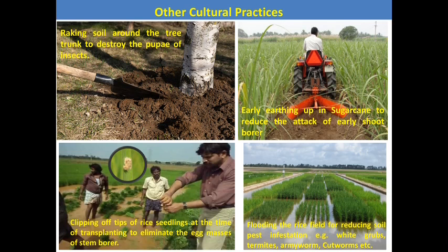The next technique is clipping the tips of rice seedlings. Before transplanting, rice seedlings are grown in a rice nursery. During nursery growing, the stem borer — a major pest of rice — lays eggs at the tips of the seedlings. Cutting the tips at the time of transplanting helps destroy the egg masses of the stem borer and reduces the pest population in the main rice field.